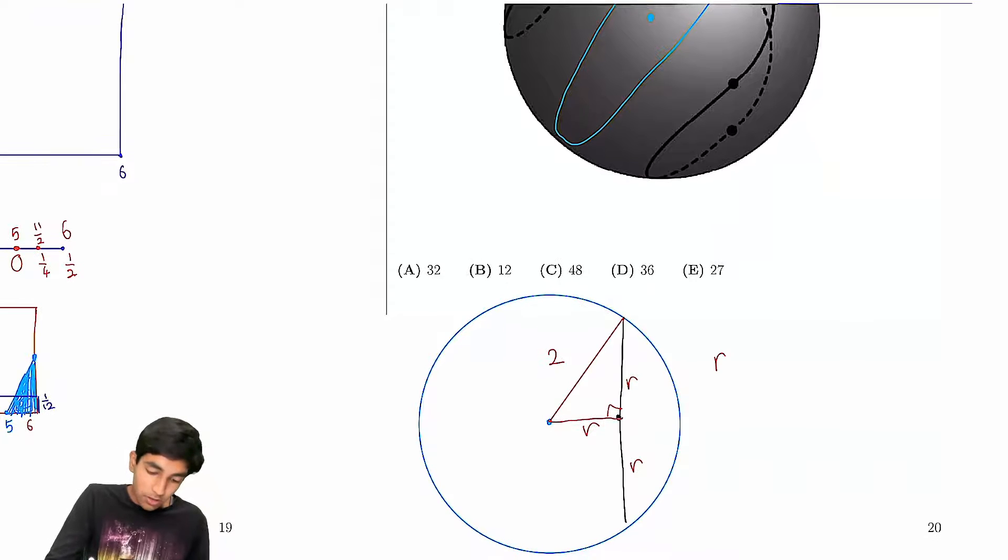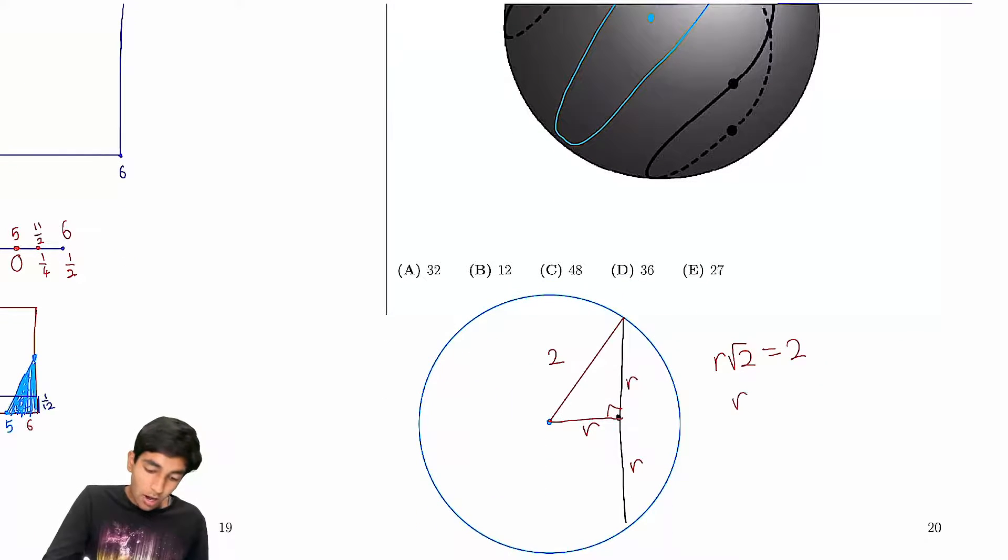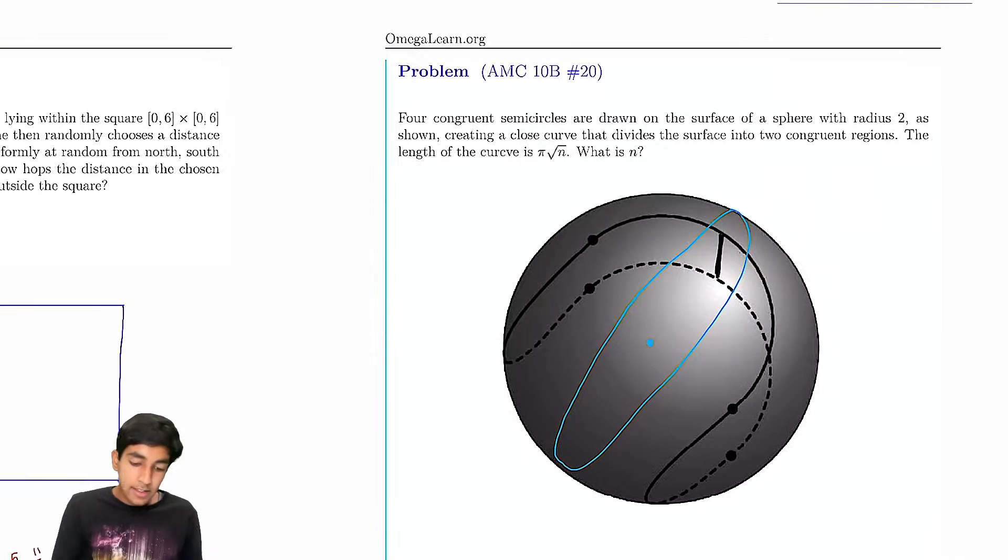Therefore, now we have 45, 45, 90 triangles. We have r root 2 equals 2. So therefore, r is square root of 2. And now it's pretty easy.